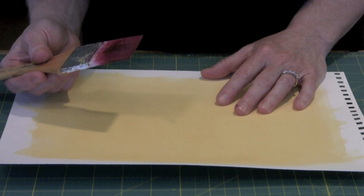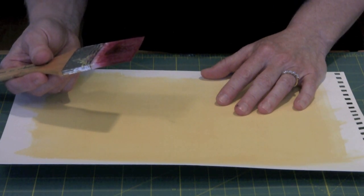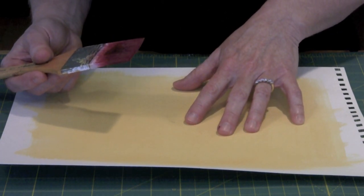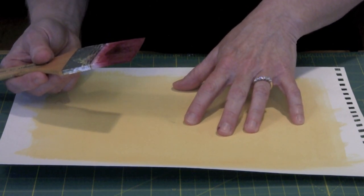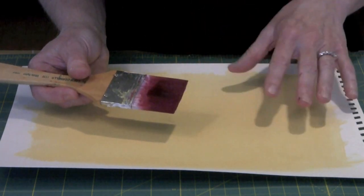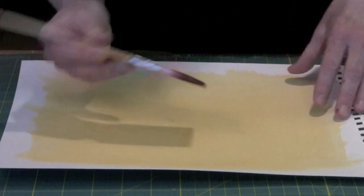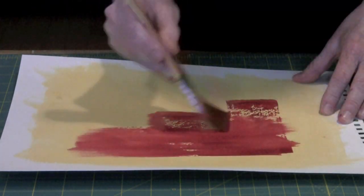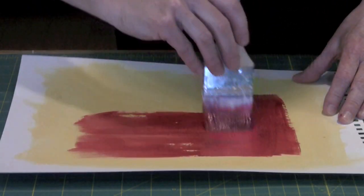This technique uses rubbing alcohol to create patterns in wet paint. The first step is to paint your substrate and let that first layer dry. After it is dry you're going to come in. I have some red paint that's a little bit diluted, not straight out of the bottle. I'm going to brush this on, and then I'm going to drizzle alcohol on it and you'll see the patterns that form.